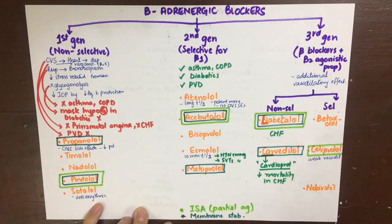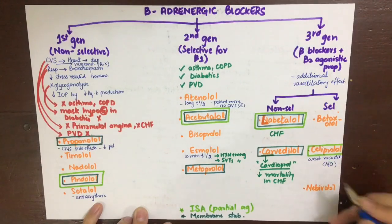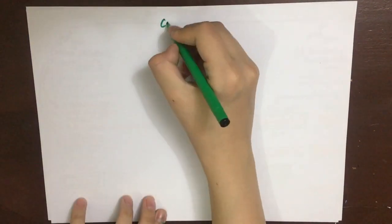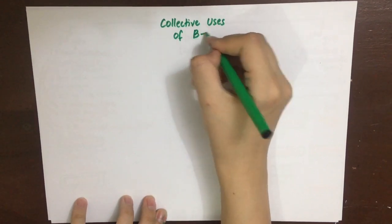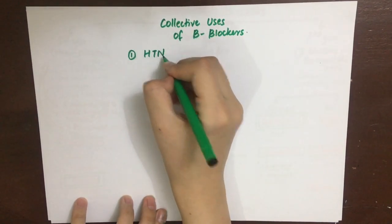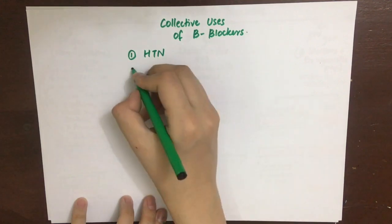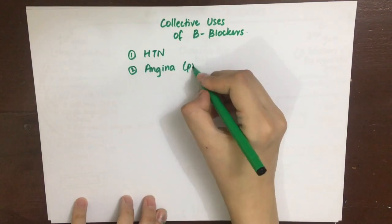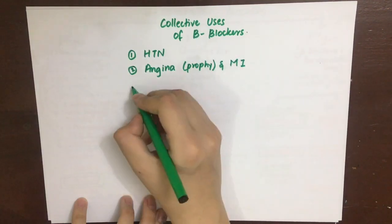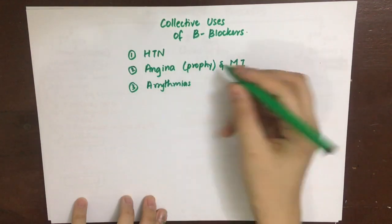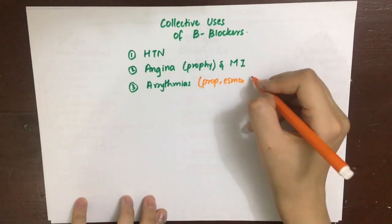Carvedilol is cardioprotective, likely due to its antioxidant properties, and decreases mortality in CHF patients. Celiprolol has a weak vasodilatory effect by releasing nitric oxide. Collectively, beta blockers are used in hypertension by decreasing heart rate, promoting left ventricular remodeling, and decreasing renin release, thereby suppressing the renin-angiotensin-aldosterone system. They are also used in angina prophylaxis and MI by decreasing myocardial oxygen demand through reduced contractility.